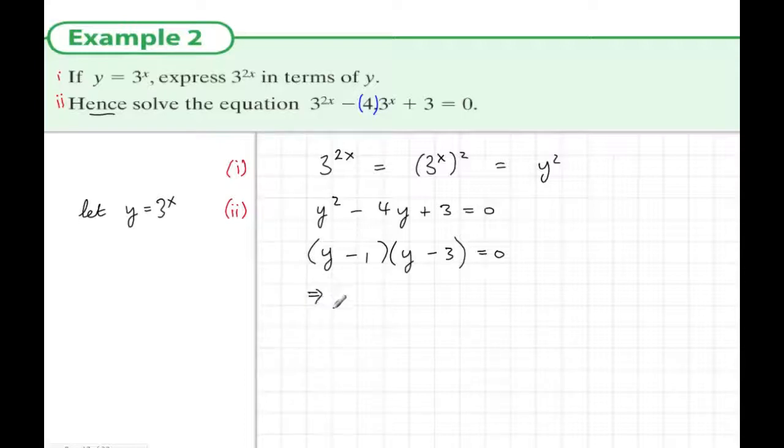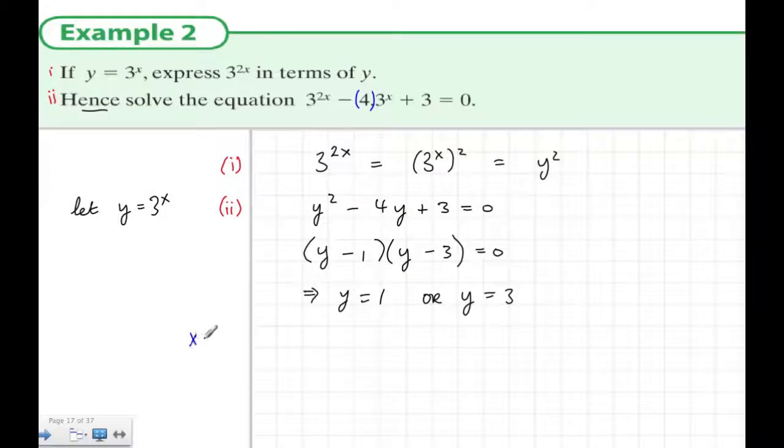And this gives us that y would be equal to 1, or y would be equal to 3. Now this is not the answer to the question, because we really want to know what x is, not what y is. And we know from the start that y is equal to 3 to the power of x. So using the first answer, 1 equals 3 to the power of x, well, 3 to the power of 0 is 1. So therefore, x in this example must be equal to 0.